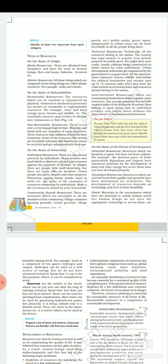Ab dekhte hain — all the minerals, water resources, forest, wildlife, land within the political boundaries, and oceanic area up to 12 nautical miles (22.2 km) from the coast, termed as territorial water and resources therein, belong to the nation. Sare khanij padarth, jal sansadhan, van, rajnitik simao ke andar sari bhoomi aur sari rashtriya sampada — ye sare rashtriya sansadhan hain.